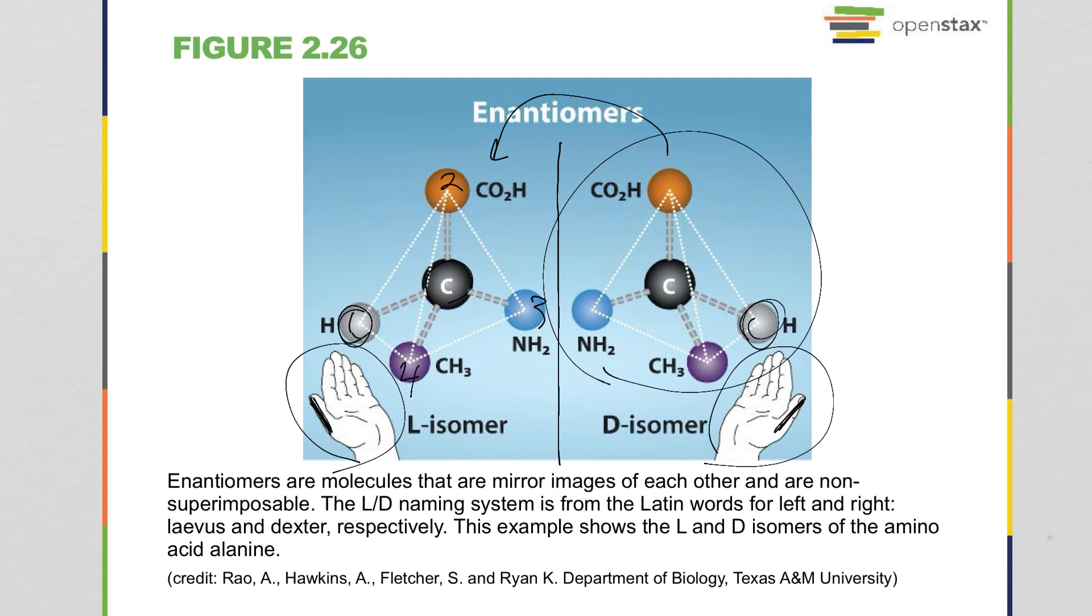No matter how you twist and rotate and align these molecules, they won't ever perfectly line up with each other. Which explains why when you try to do enzymatic reactions is that if the enzyme recognizes the L isomer, it won't recognize the D and vice versa because enzymes in their substrates have to fit together perfectly like puzzle pieces. And if the puzzle piece is a mirror image of what it's supposed to be, then you wouldn't expect those pieces to fit together correctly.